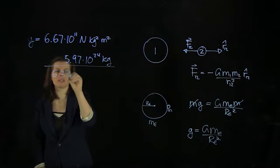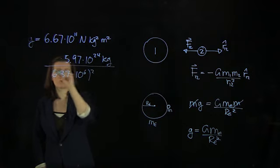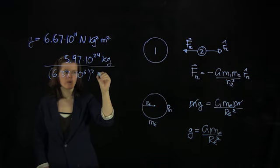And then we have to divide this over through the Earth radius, 6.37 times 10 to the 6. And we have to square that and we have to square the meters.